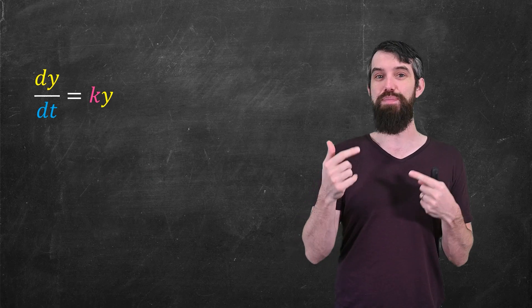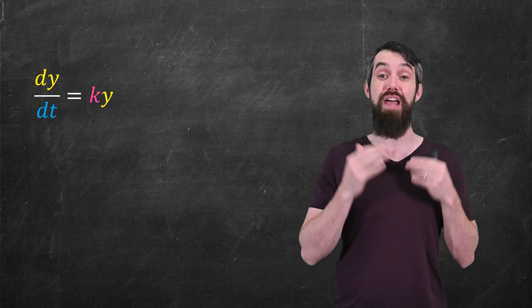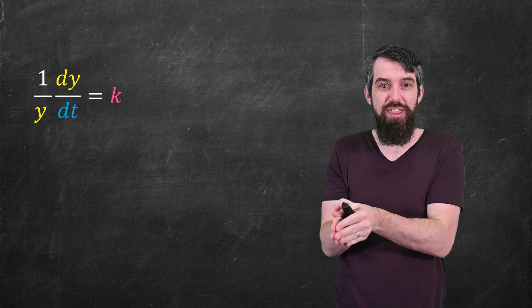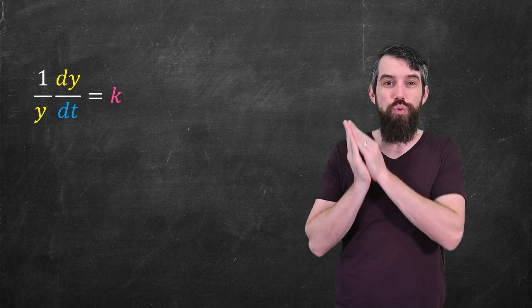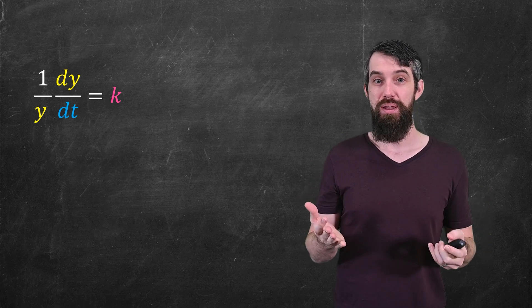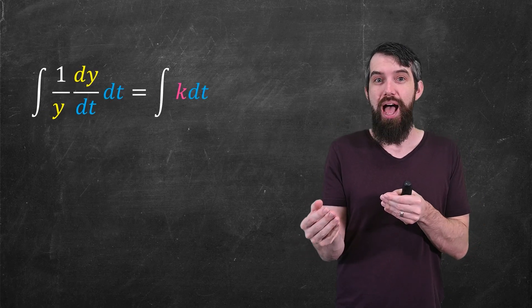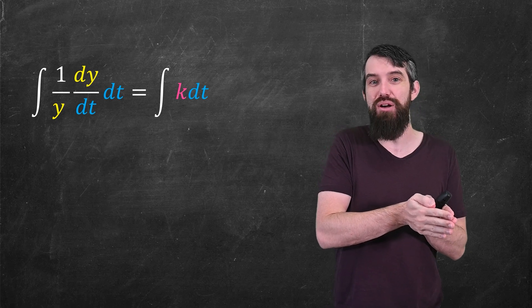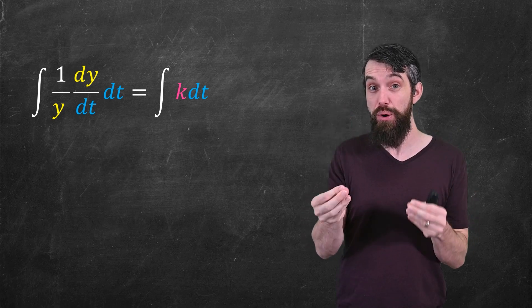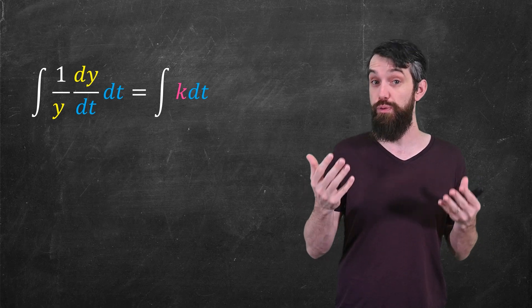So what we're going to do is this method of separation of variables. The first thing I'm going to do is take the y on the right-hand side and divide it out and put it on the other side. The reason I'm doing this is that now on the left-hand side there's everything in terms of y and the derivative with respect to y. On the right-hand side there's nothing to do with y at all. Now I'm going to take an integral of both sides with respect to t. I'm allowed to integrate both sides with respect to t.